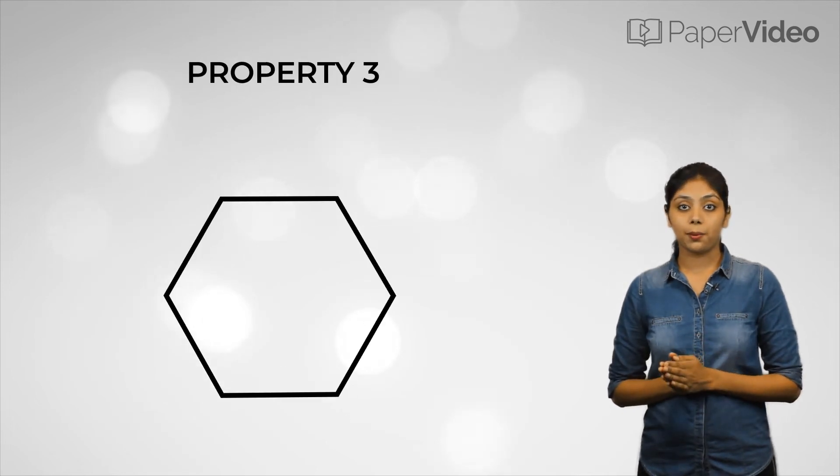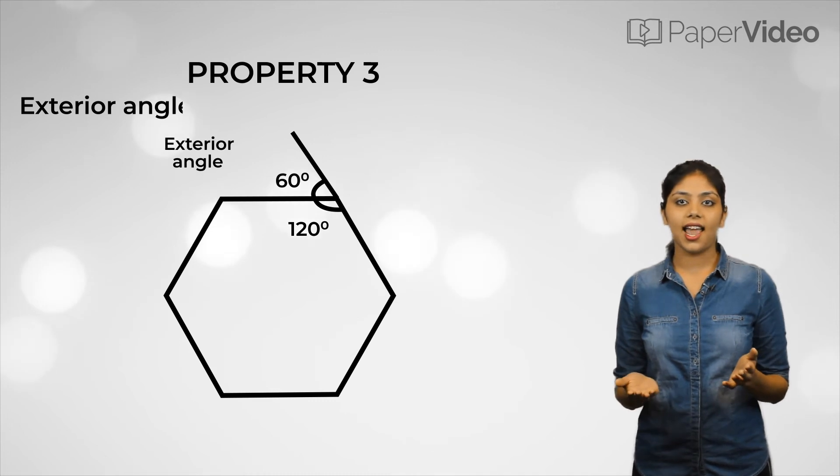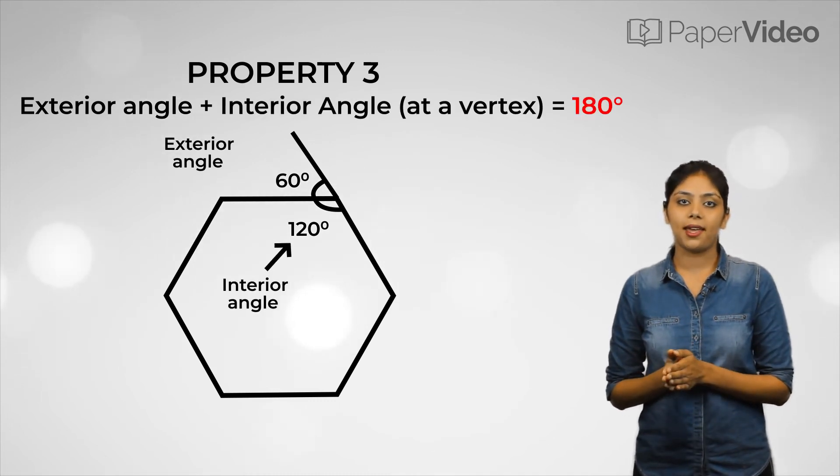According to the third property, at each vertex of every polygon, the exterior angle and the interior angle form a linear pair.